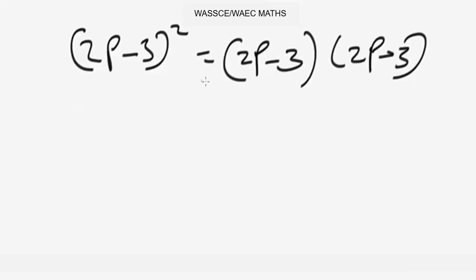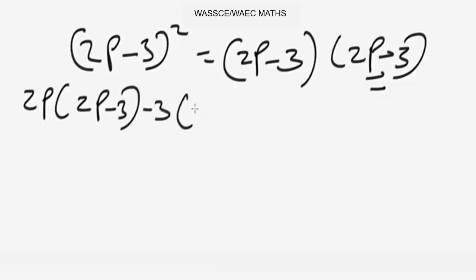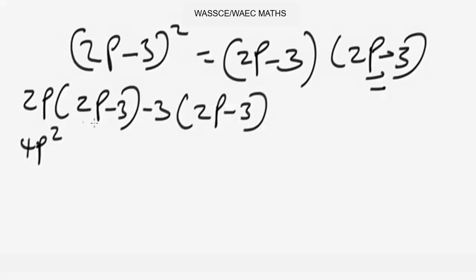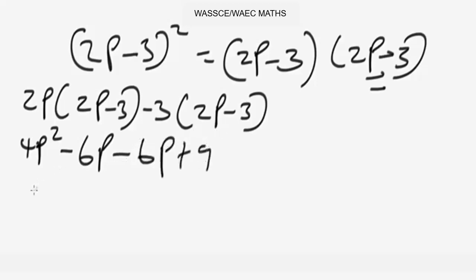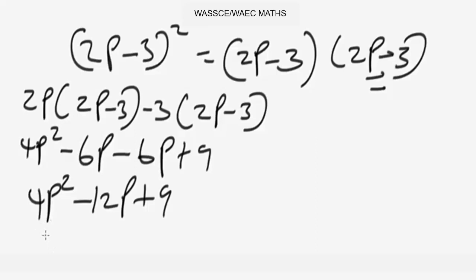To solve: this is the same as 2p minus 3 times 2p minus 3. First, 2p multiplies everything, then minus 3 also multiplies everything. So: 2p times 2p gives 4p squared; 2p times minus 3 gives minus 6p; minus 3 times 2p gives minus 6p; minus 3 times minus 3 gives plus 9. Collecting like terms: 4p squared, minus 6p minus 6p gives minus 12p, plus 9. That's the answer.